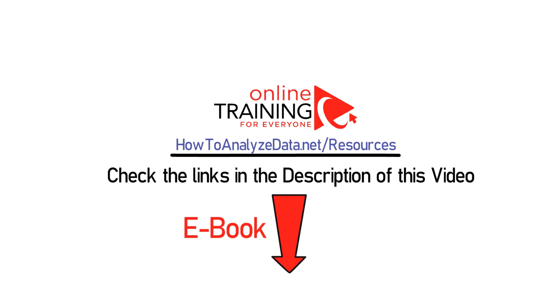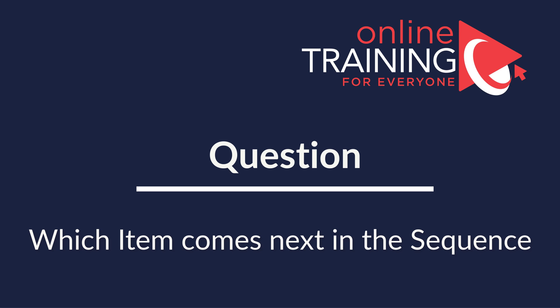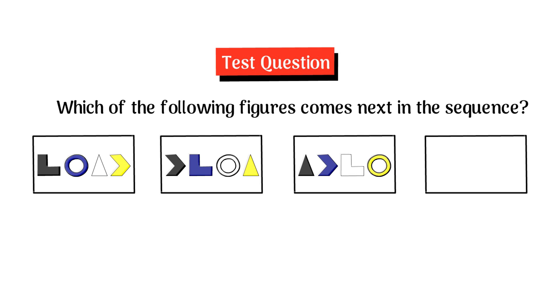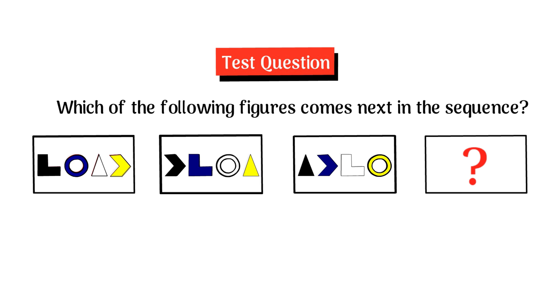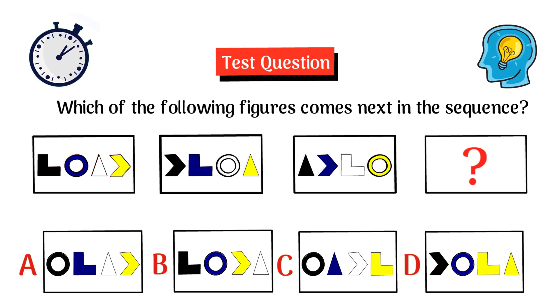In case you need to practice with more questions, please make sure to check out my ebook in the description section of this video. Here's a very cool question that you frequently see on the test. You're presented with four rectangles. In each rectangle, there are different shapes of different colors. Three rectangles have shapes present, and the fourth rectangle on the right has all the shapes missing. You have four choices — A, B, C, and D. Give yourself 5 to 15 seconds — this is about as much time as you will get in the real test.